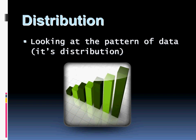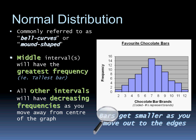The next way to interpret data is to look for the pattern that exists within it — it's distribution. There are four major distributions we'll look at. The first is normal distribution, commonly referred to as bell curves or mound shape. The middle interval will have the greatest frequency — that is, the tallest bar of our bar graph — and all other intervals will have decreasing frequencies as you move away from the middle. The graph on the right shows favorite chocolate bars, coded from 2 through 12. Let's say 7 was Mars — that has the most frequency, and as you move to other brands, frequency decreases. This normal distribution is often what we see when we look at incomes or other numerical data sets.